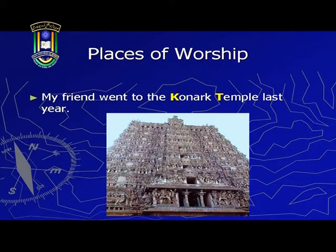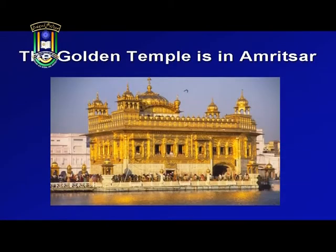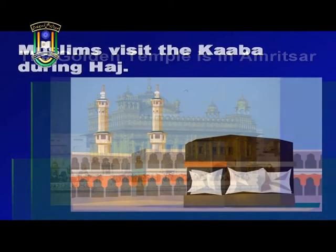Apart from monuments, capital letters are also used to indicate names of places of worship. My friend went to the Qunak Temple last year. The Golden Temple is in Amritsar. Muslims visit the Kaaba during Hajj. In these examples, the names of places of worship — whether it is the Qunak Temple, the Golden Temple, or the Kaaba — have all been capitalized. So, apart from names of monuments, you will also capitalize names of holy places.